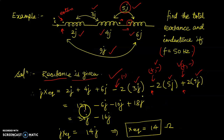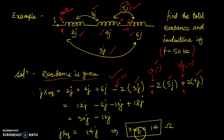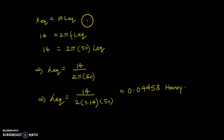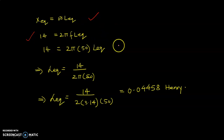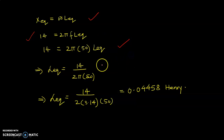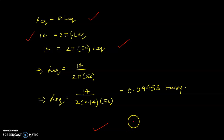Since X equivalent equals Omega·L equivalent, we have 14 equals 2·π·50·L equivalent. Solving: L equivalent equals 14 divided by (2 × 3.14 × 50), which gives L equivalent approximately equal to 0.4458 Henry. This is our final answer.